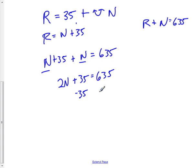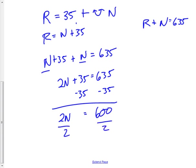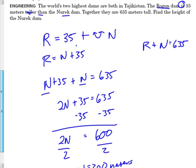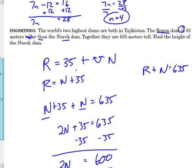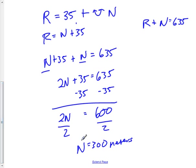Let's go ahead and subtract that 35 on both sides to get 2N equals 600. Then we'll divide by 2 on both sides to get N equals 300. That would be 300 meters for the Nurek Dam. So that means the Rogan Dam is 35 meters taller, which would be 335 meters tall. That does make sense: 335 plus 300 equals 635. But we were just asked to find the Nurek Dam height, so the Nurek Dam is 300 meters tall.